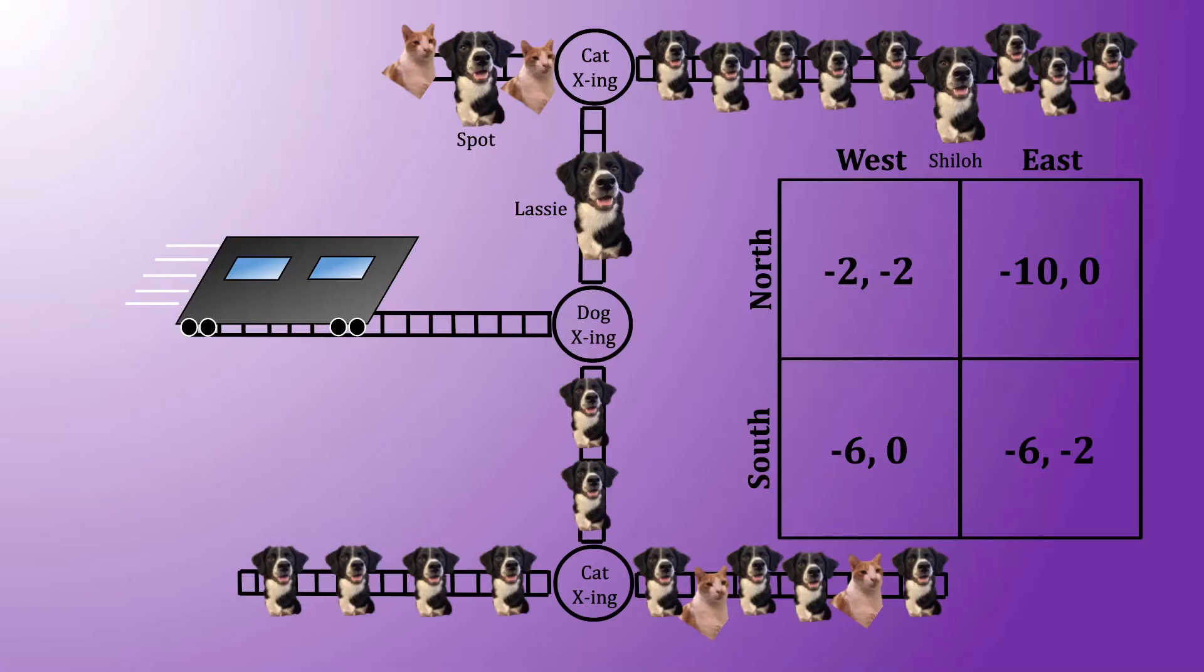You'll notice that the payoffs create a classic style of guessing game. If the dog were to plan to go north, the cat would want to choose east, and make sure that no cats are hit. But if the cat were going east, the dog would prefer to go south, so that only six dogs are hit, instead of ten.